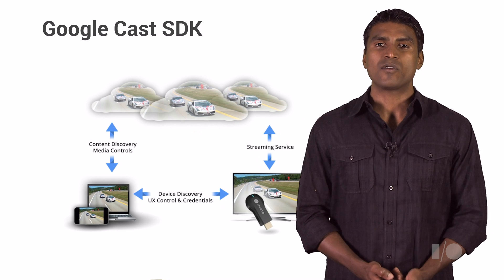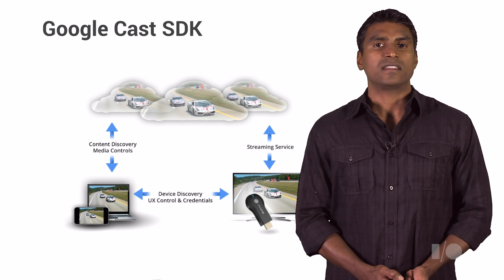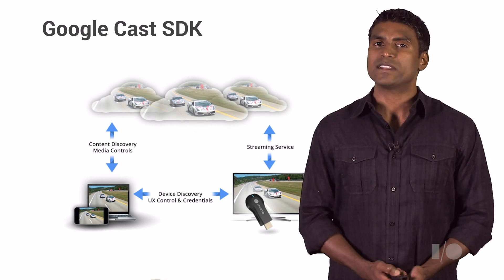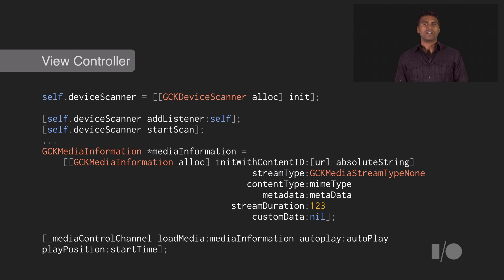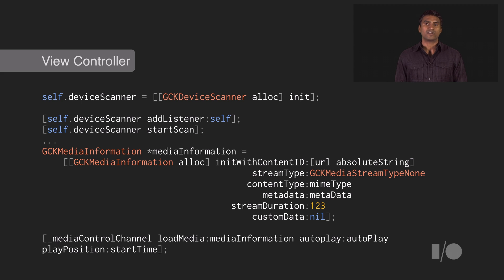It's really straightforward to implement. The flow is: first you scan for devices, and once you register against the device, you simply send the media content up to that device. The device is called the receiver, and you can actually customize the look and feel on the receiver using standard web technology in case of advanced scenarios.